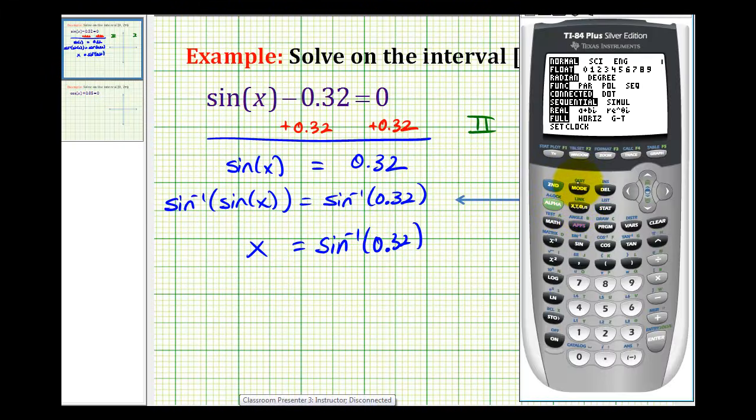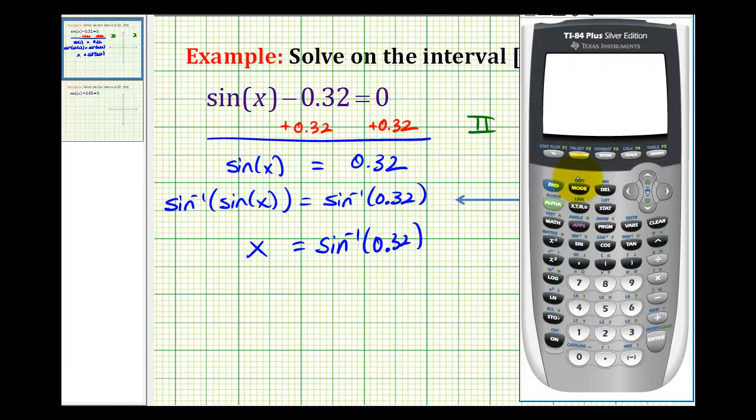Let's check to make sure we're in radian mode. And we are. So now we'll press second sine for inverse sine zero point three two or just point three two.